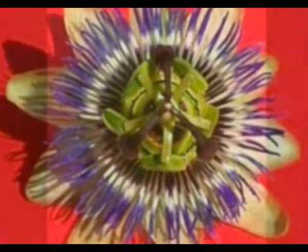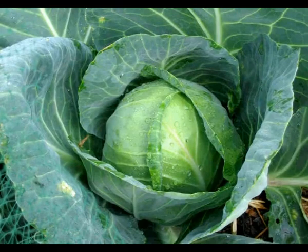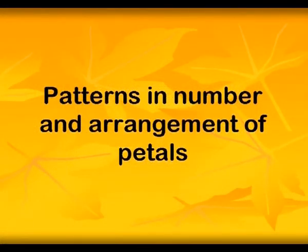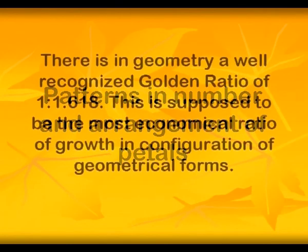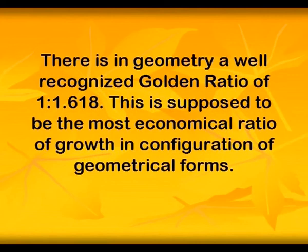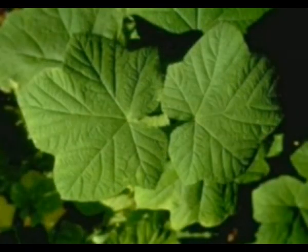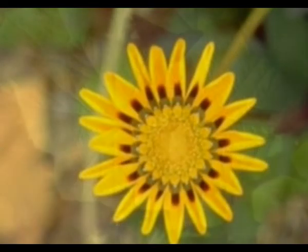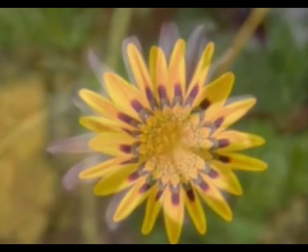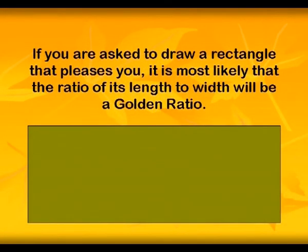In fact, there is a definite geometry at work where patterns are concerned. In geometry, there is a well-known golden ratio of 1 to 1.618, which is supposed to be the most economical ratio of growth in the configuration of geometrical forms. In nature, we find that the golden ratio is not an absolute but a proportion that tends towards 1 to 1.618. If you are asked to draw a rectangle that pleases you, it is most likely that the ratio of its length to width will be a golden ratio.